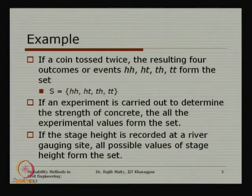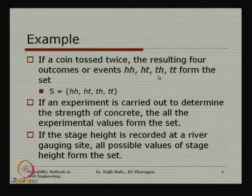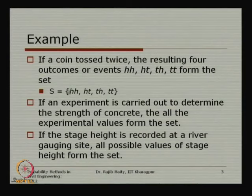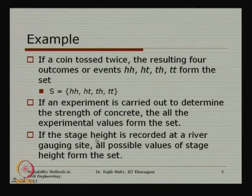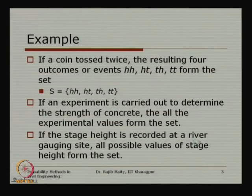Looking at different examples: if we take a coin and toss it twice, then the outcomes can be head-head, head-tail, tail-head, or tail-tail. The collection of all outcomes of this experiment is one set. In another example, if an experiment is carried out to determine the strength of concrete in civil engineering, then all experimental values form a set. Similarly, if we measure the stage height at a river gauging site, all possible values of the stage height form a set.